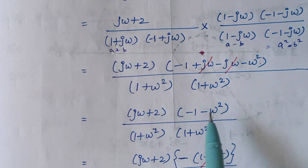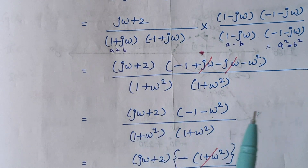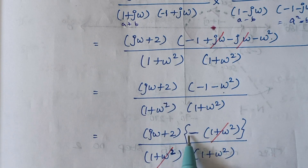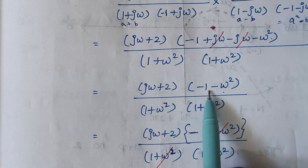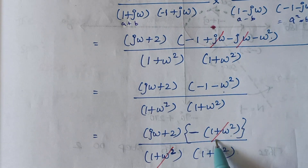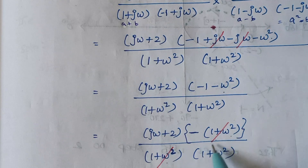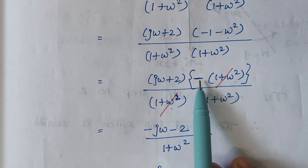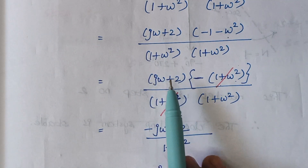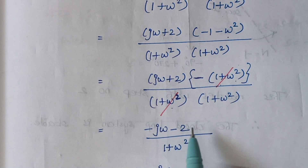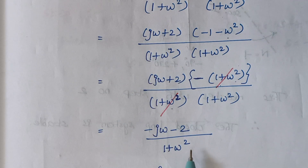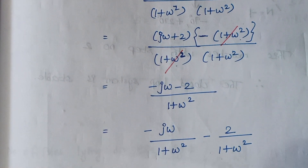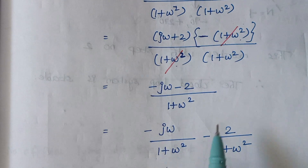The remaining numerator term is minus 1 minus ω squared. Taking the minus sign out commonly, this term becomes 1 plus ω squared. This 1 plus ω squared in numerator and denominator cancel each other. Finally the answer is minus 1 multiplied by jω plus 2, giving minus jω minus 2 divided by 1 plus ω squared. Splitting into real and imaginary terms, the real term is minus 2 divided by 1 plus ω squared and the imaginary term is minus jω divided by 1 plus ω squared.